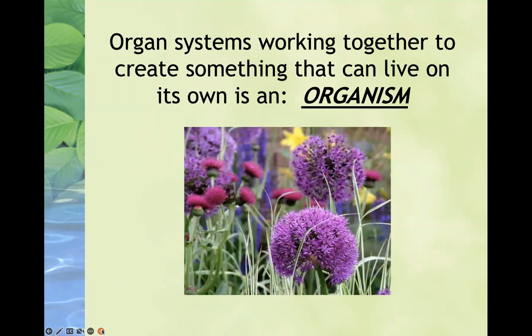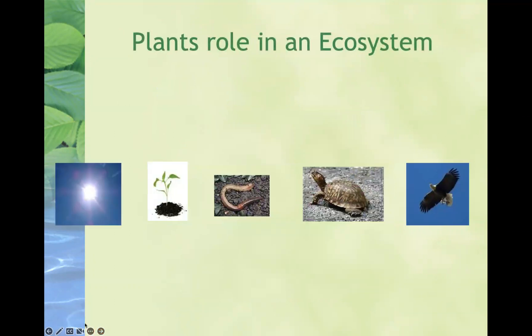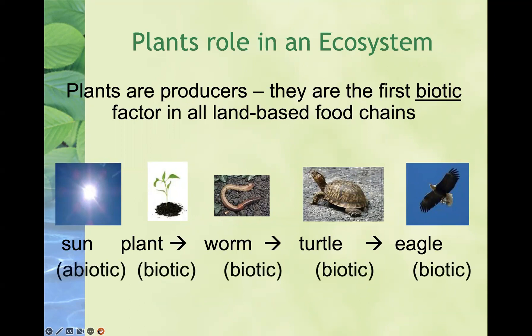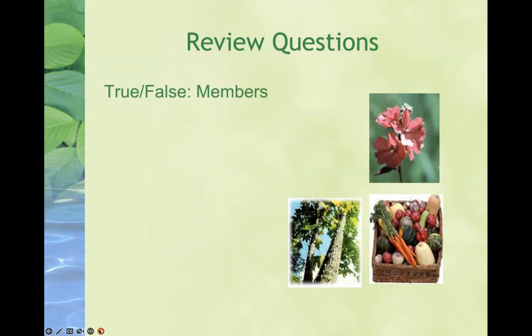We need to consider the role of plants in the ecosystem. Plants are producers — they are super important when we think about sustaining life. They are the first biotic factors in all land-based food chains. These producers will be consumed by primary consumers, secondary consumers, and so forth. Plants are absolutely essential in the ecosystem. There are a set of review questions that you can work on at the end of this presentation in your notebook.